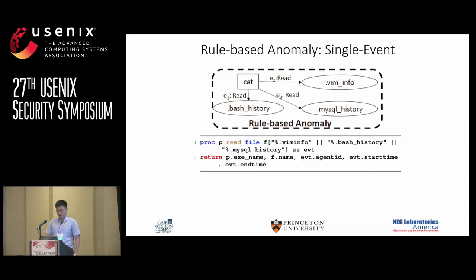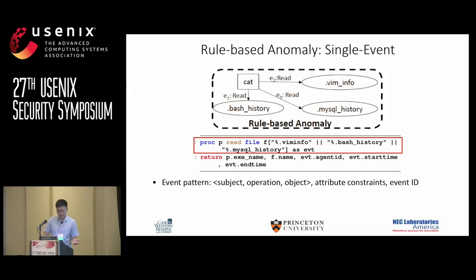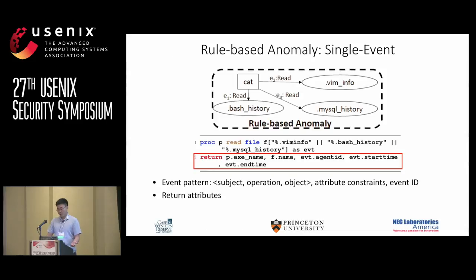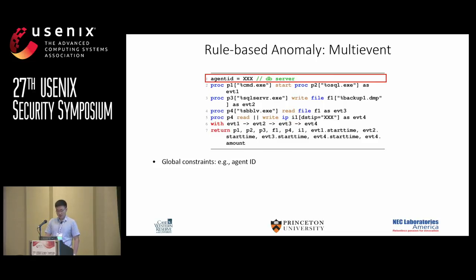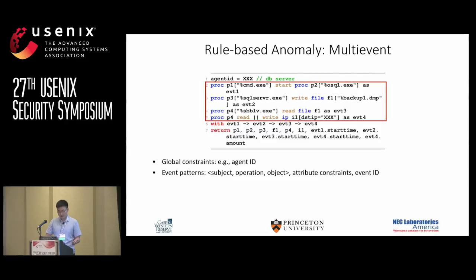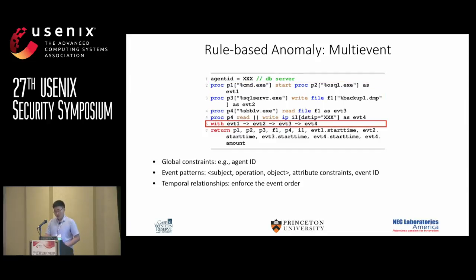Our language supports roughly four types of anomaly models. Rule-based anomalies specify the behavior rules of system activities. For example, in a single event query, we define an event pattern where a process reads a file whose name matches certain history files, then return desired attributes from matched events. In a rule-based multi-event query, we define multiple event patterns. Global constraints enforce conditions all event patterns must satisfy. We define event patterns successively in the form of subject, operation, object, with certain attributes to constrain the search. In the where clause, we define the temporal relationships — event one should happen first, then event two, then three, then four.